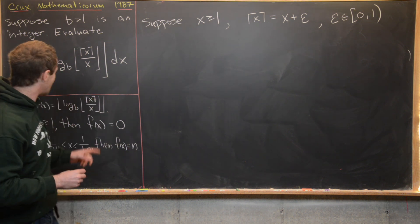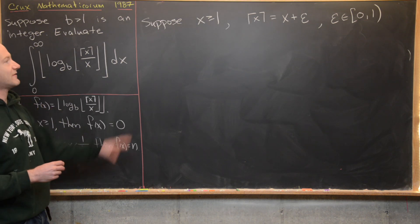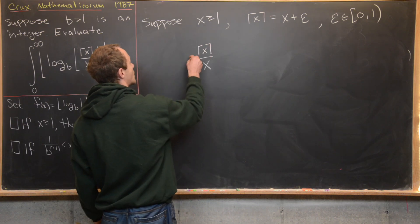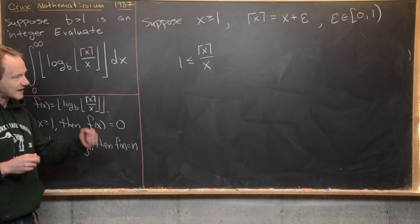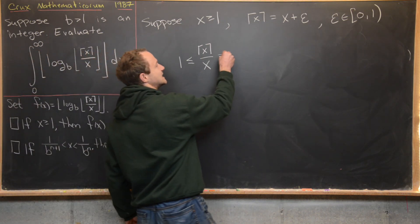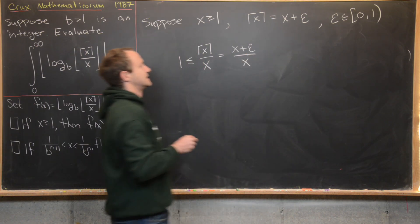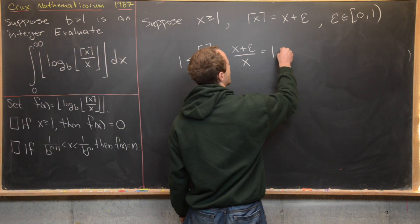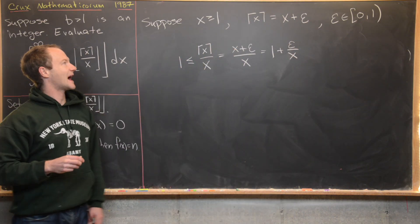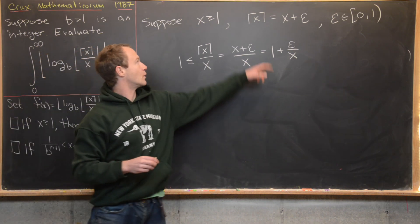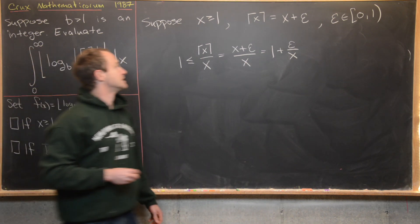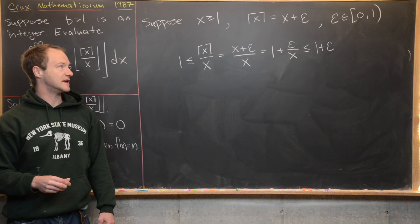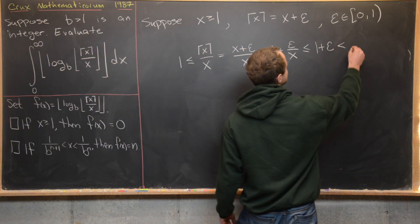Now let's look at the quotient ceiling of x over x — the innermost part of f of x. That's always going to be greater than or equal to one, because the ceiling always makes something bigger. That equals x plus epsilon over x, which we can break up as one plus epsilon over x. Since x is greater than or equal to one, we know one over x is less than or equal to one, so the whole thing is less than or equal to one plus epsilon. Since epsilon is on the interval zero to one, not including one, this is strictly less than two.